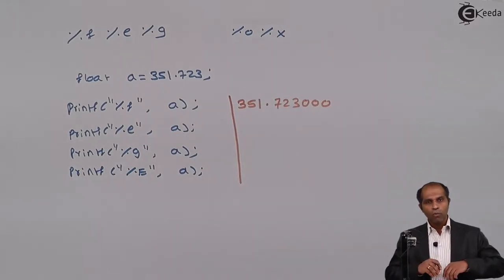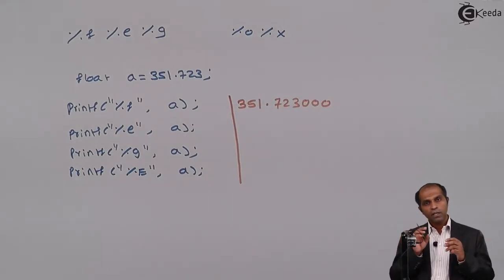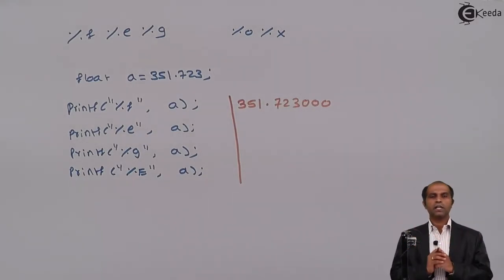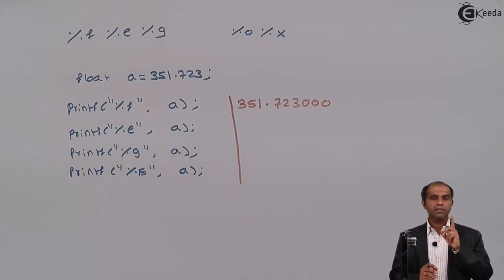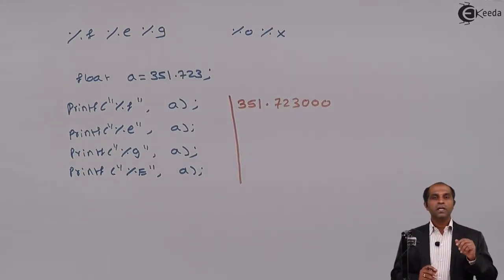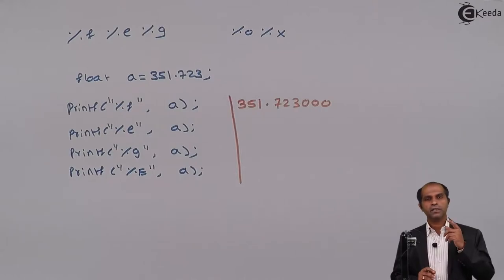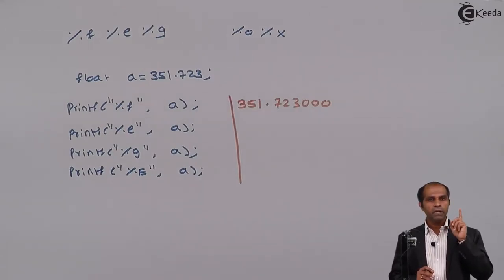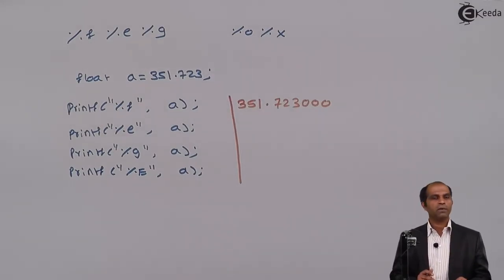The %f format specifier will always use six digits in the fraction part. Since I have fewer digits, it adds additional zeros. If there were more digits, all of them would be displayed. The rule is a minimum of six fractional digits — if you have fewer, it pads to six.